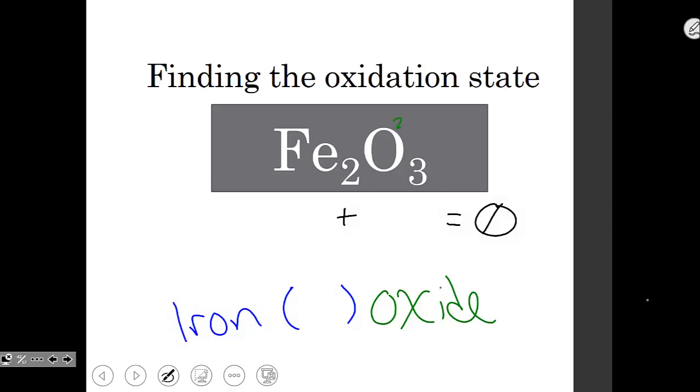Oxide is when oxygen develops a charge. Oxygen is always a minus two oxidation state, so three times a minus two. This gives us a minus six overall.